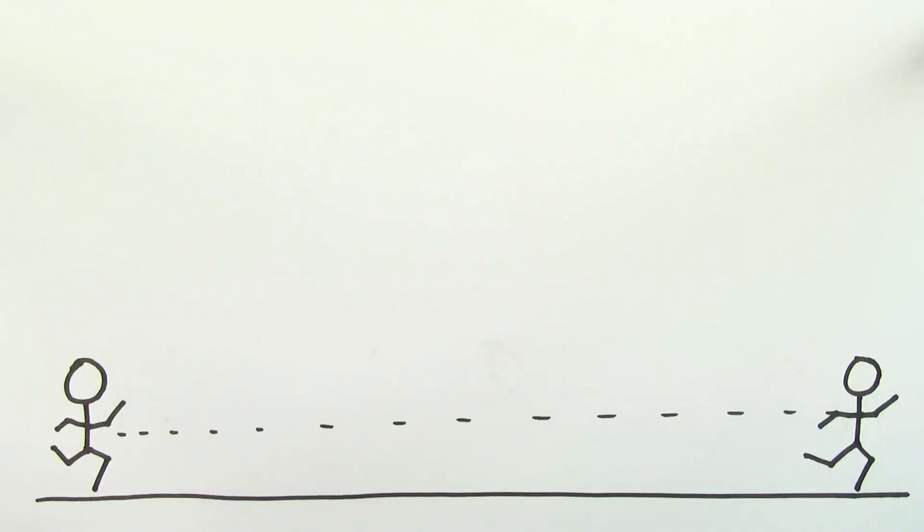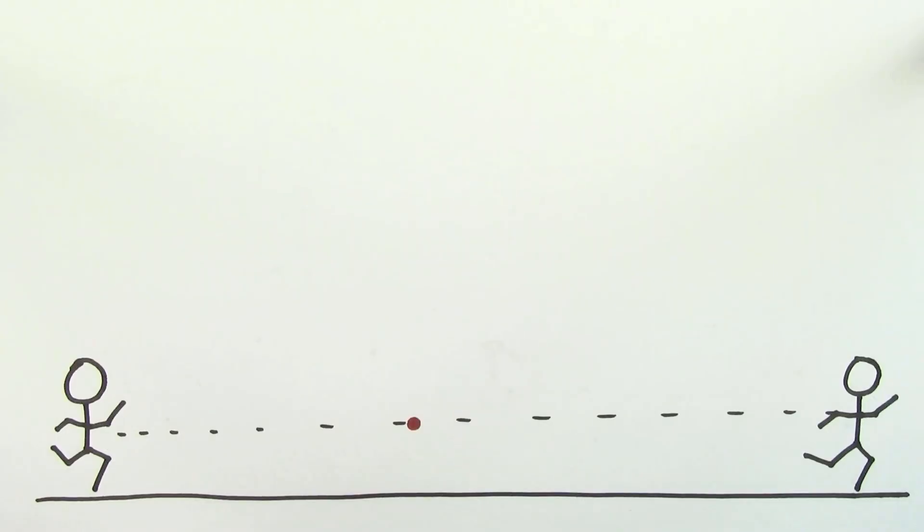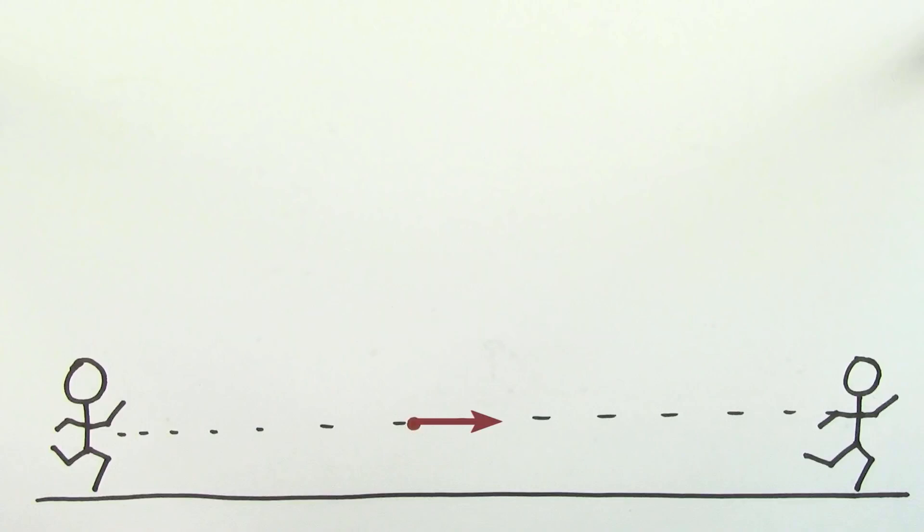Say you wanted to know the instantaneous velocity at a particular point in time during this trip. In that case, you'd want to find a smaller displacement over a shorter time interval that's centered at that point where you're trying to find the instantaneous velocity. This would give you a better value for the instantaneous velocity, but it still wouldn't be perfect.